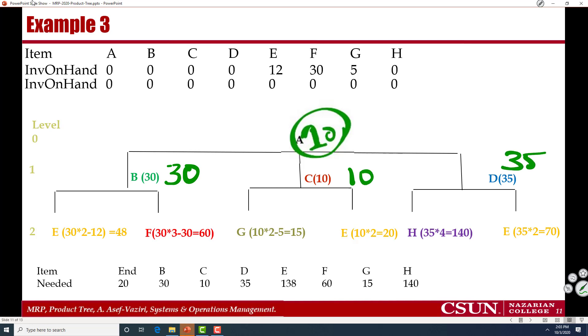Then when I go to the next level, 60F, 15G, 140H. And E, I need 70 here. 90 plus 48, 138.